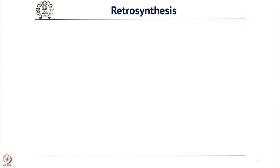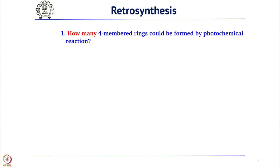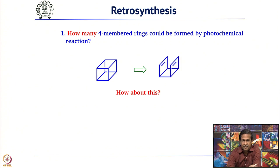Now for cyclobutane synthesis, start with Cubane and look at how many four-membered rings there are — as we have already seen, there are six four-membered rings. We know four-membered rings can be made by photochemical reaction. The next question is: how many four-membered rings do you want to make using photochemical reaction? You can do a simple retrosynthesis and see whether you can make three four-membered rings.